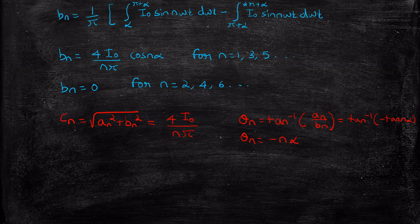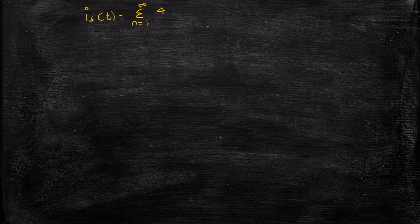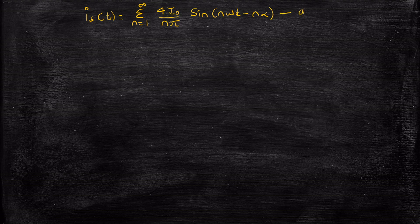We have now found all the quantities required for our analysis. Let us write the final expression for Is(t). Substituting all values into equation 2 with n equal to 1 to infinity, we get Is(t) equal to summation of 4·I_naught by (n·pi) times sin(n·omega·t minus n·alpha). This is a very important expression — let us call it equation A. Based on this equation, we will determine many parameters.